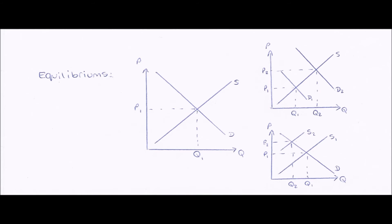We can put supply and demand curves together to create a supply and demand diagram. Where the demand and supply curves cross, we have the equilibrium, where demand equals supply. Our equilibrium price is the price at which demand equals supply, and no matter if the curves shift, our new equilibrium will be where the new curves meet.